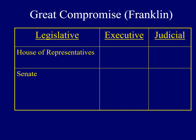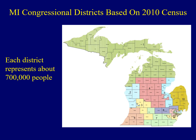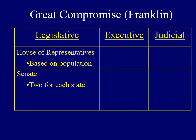The number of representatives for each state was based entirely on population, making people from large states happy. We have a census every 10 years, and these days each member of Congress represents a district of about 700,000 people. Today Michigan has 14 members of the House of Representatives — we're a fairly large state. Each state is treated equally in the United States Senate: each state, whether in the North, the South, large or small, has two senators.